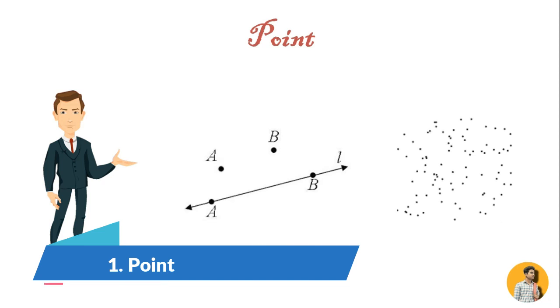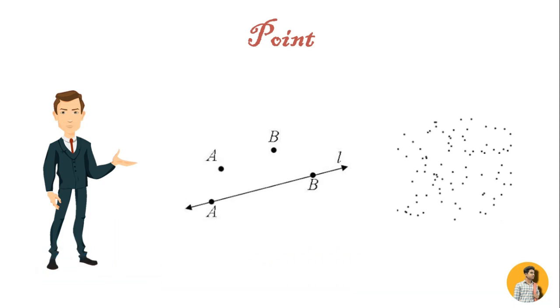First is point. Point is the prime generator of form. It indicates a position in space. It has no length, width, depth, and therefore it is dimensionless.